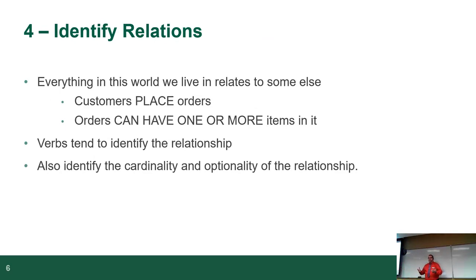Then you identify relations. Everything in the world we live in relates to something else, one way or another. It is impossible for something to be completely not connected to something else. Normally, if you're trying to find relations, you talk about your data. And usually the verb in the sentence is how things are connected. A customer places an order. Orders can have one or more things in it. A person attends an event. Those are verbs. Those are relations.